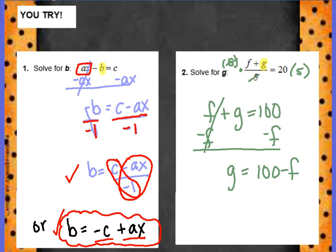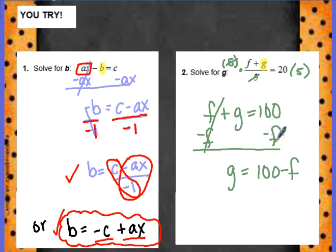Example 2: I multiplied both sides by 5 for my first step. f plus g equals 100. To get g alone, I want to minus f from both sides. g is equal to 100 minus f. Since these are not like terms, I keep my final answer like this.